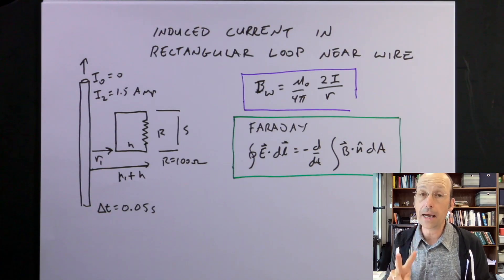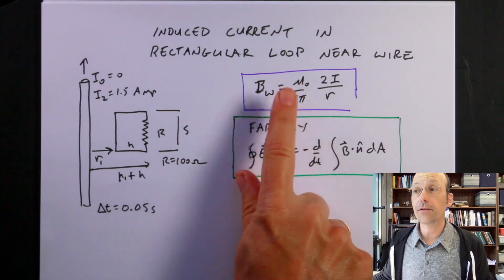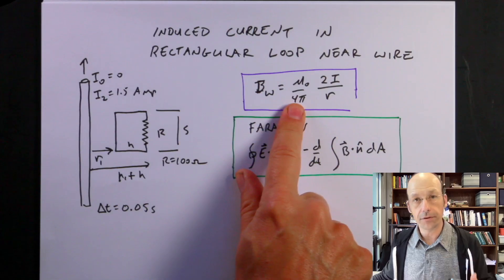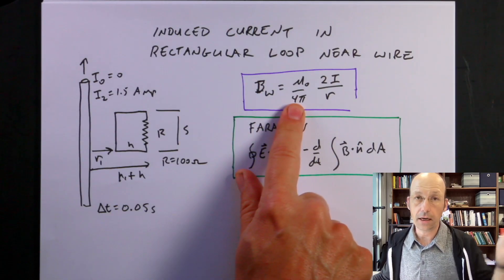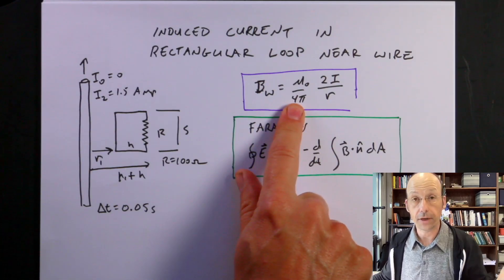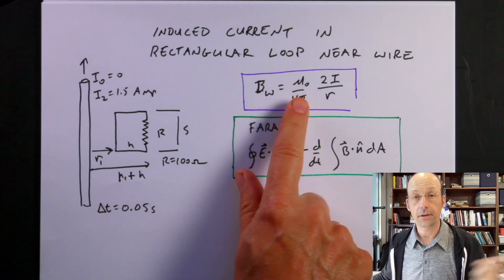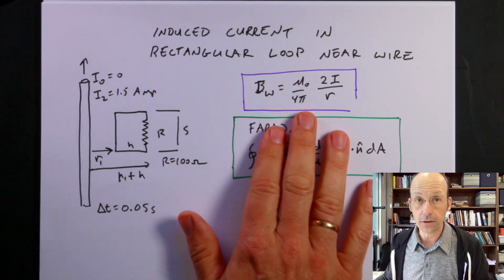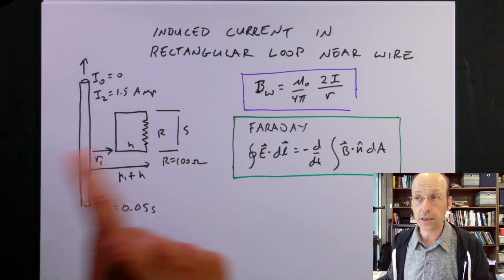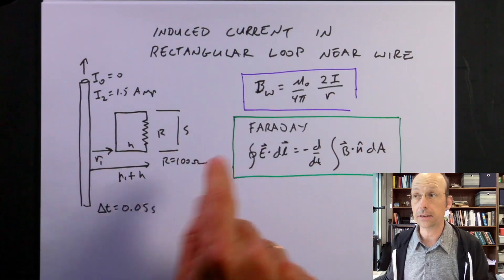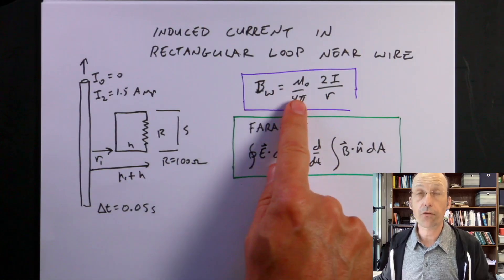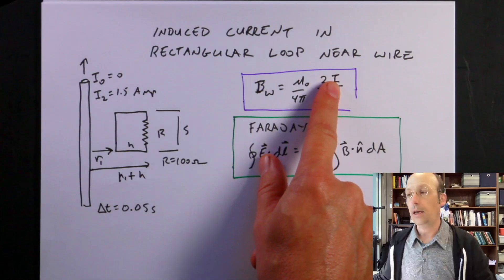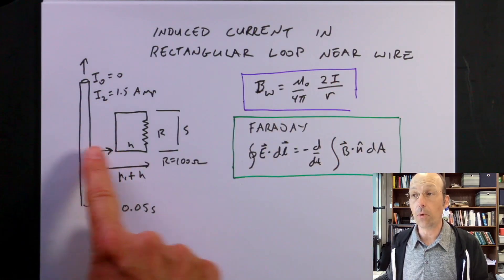There are really two big ideas. Number one is the magnetic field due to a long straight wire — I derived this in a previous video. This formula gives the magnitude of the magnetic field; it depends on mu-naught over 4-pi, which is a constant, times 2i over r, where r is the distance from the wire.